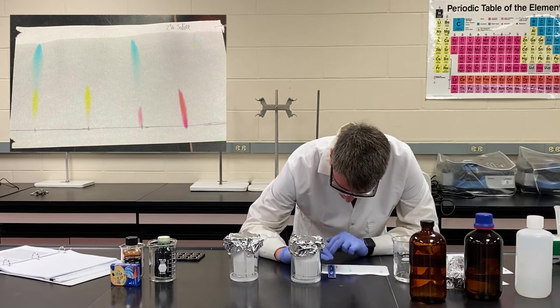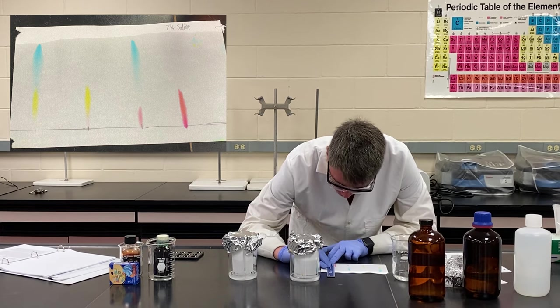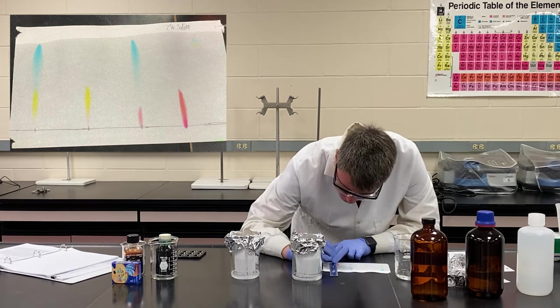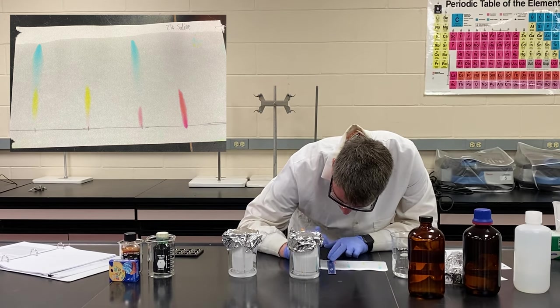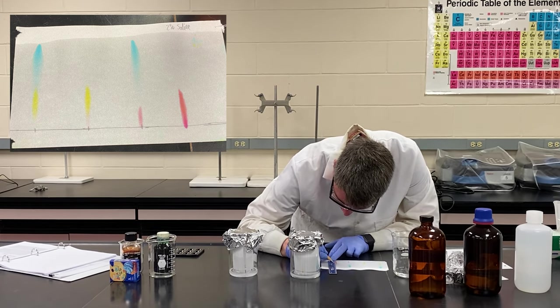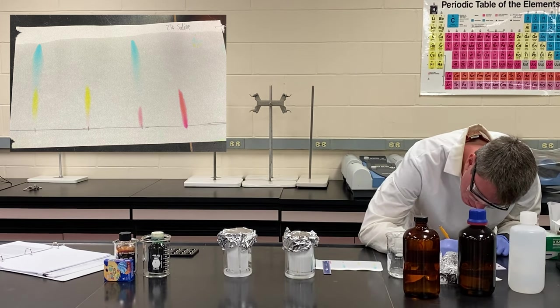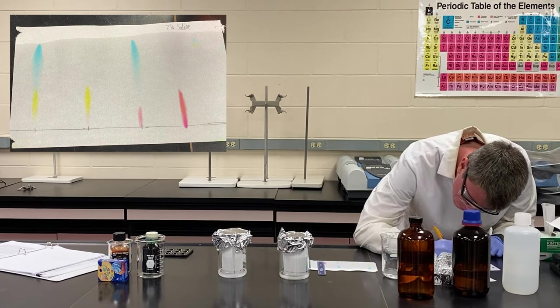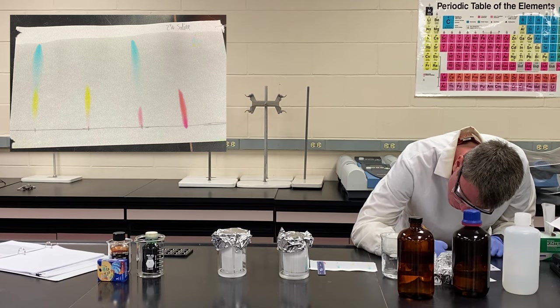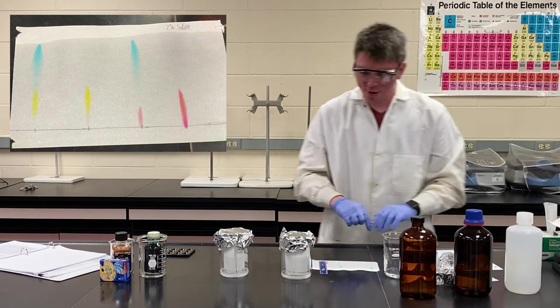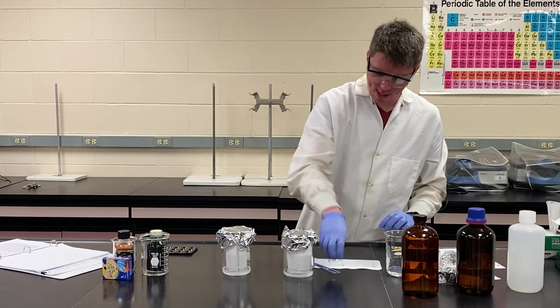And finally, we have our red dye. And the red component from this one looks a little different. It's smeared out much further. So I'm going to measure to the end of that one as well and get about 3.85. And that's all of our distances for saline.